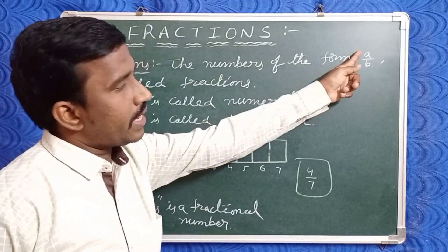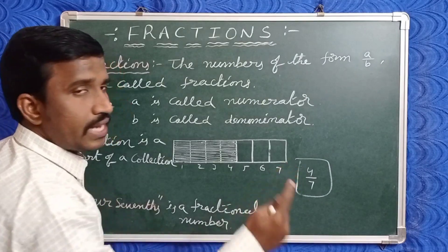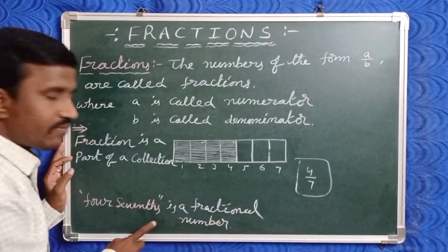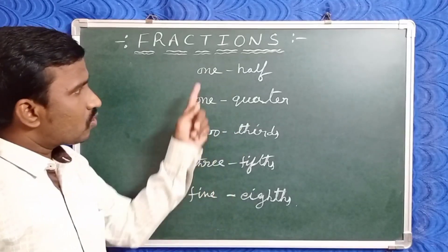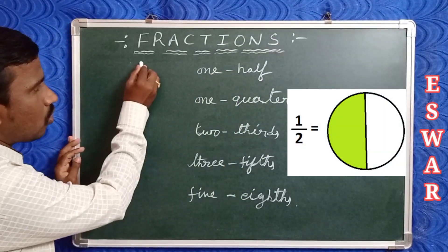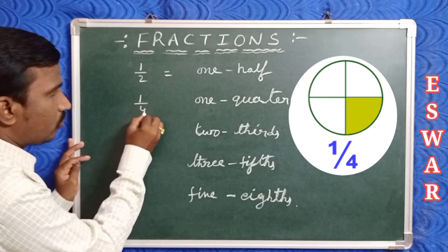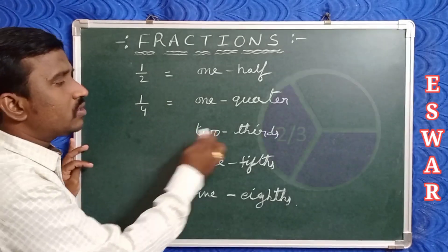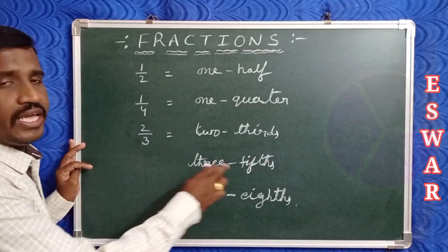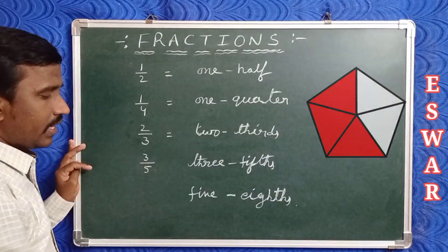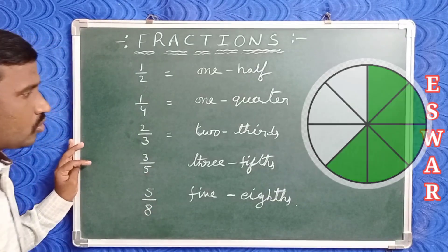In a/b, 'a' is called the numerator and 'b' is called the denominator. Here four by seven is read as 'four sevenths' — that's a fractional number. Let's check the names of some fractions: one half means one by two; one quarter means one by four; two thirds means two by three; three fifths means three by five; five eighths means five by eight.